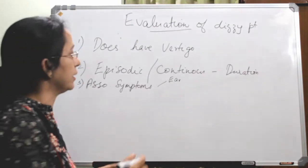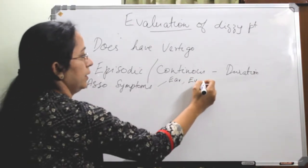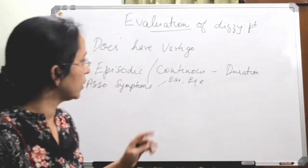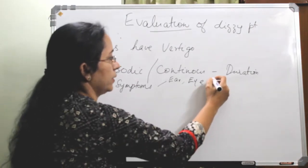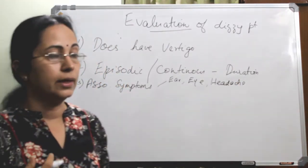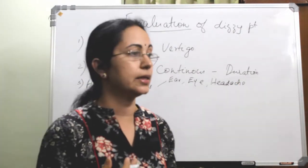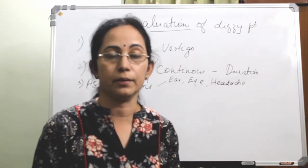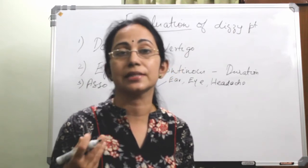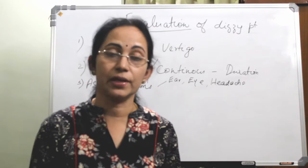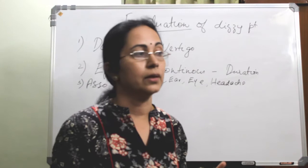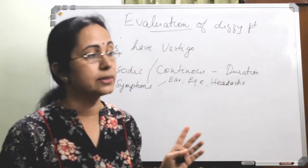Then in the eye, what can happen? There can be loss of vision or there can be diplopia. Also ask about headache. Then in the central nervous system, if there is any associated paresthesia or paralysis of any part of the body, or in vertebrobasilar insufficiency, you will get dysarthria or there will be dysphagia associated with this. So associated symptoms should be asked, especially in the ear, eye, and central nervous system.